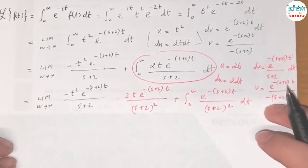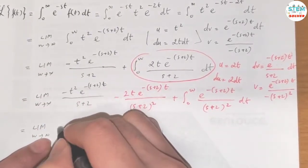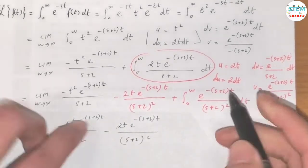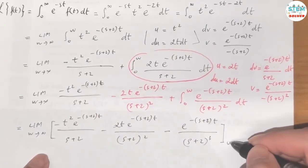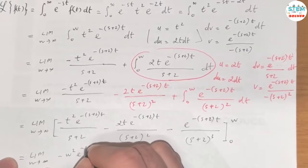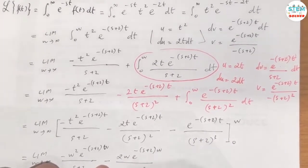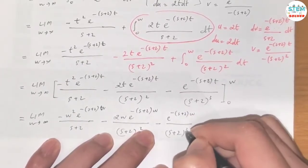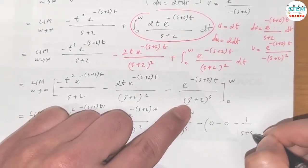Then we have to integrate this one more time. The integral of e to the negative s plus 2 times t over s plus 2 squared is negative e to the negative s plus 2 times t over s plus 2 cubed, evaluated from 0 to w. Plugging in w we get terms with e to the negative s plus 2 times w, and plugging in 0 gives 1 over s plus 2 cubed.